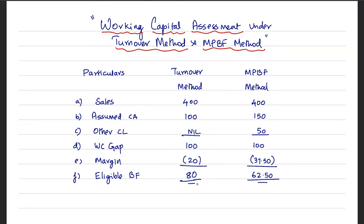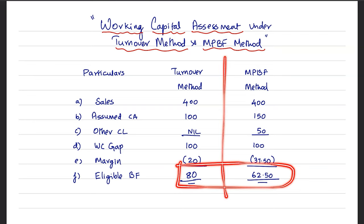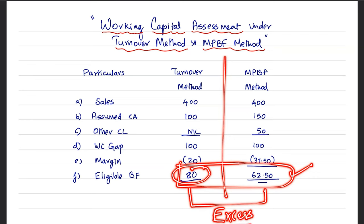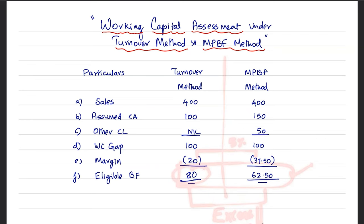So there is a possibility of excess financing. For the same customer, the actual requirement is only 62.5, but he has been funded 80. There is a possibility of excess financing. Even if you net off the difference in margin of 5%, the excess funding will still be there. And there is a possibility he can use it for some other purposes — and that's where the financial mismanagement starts.